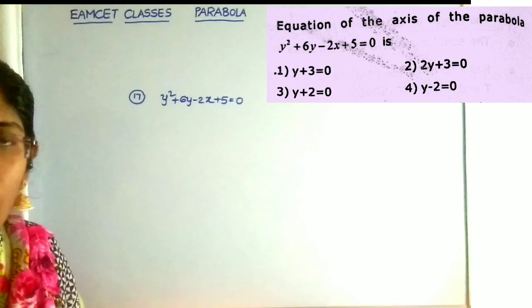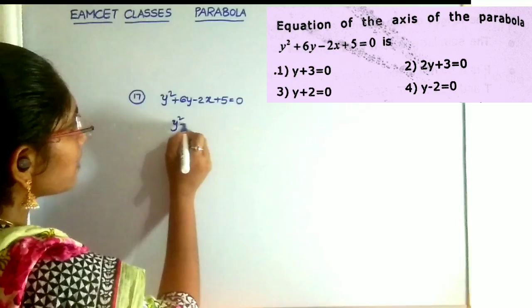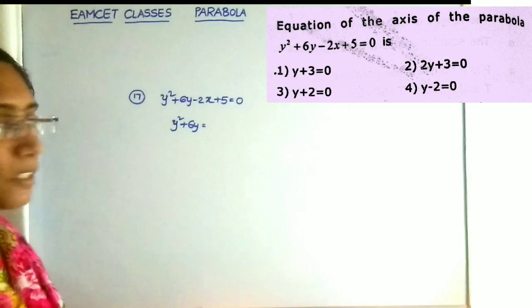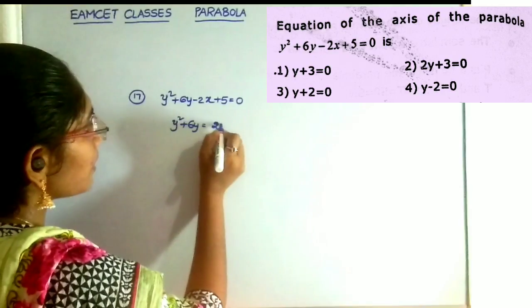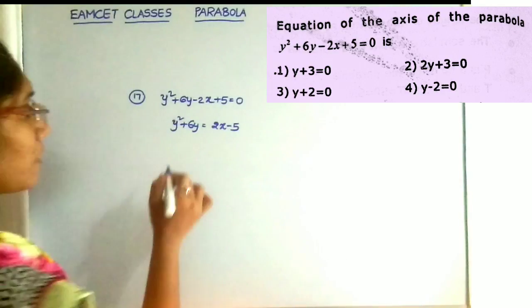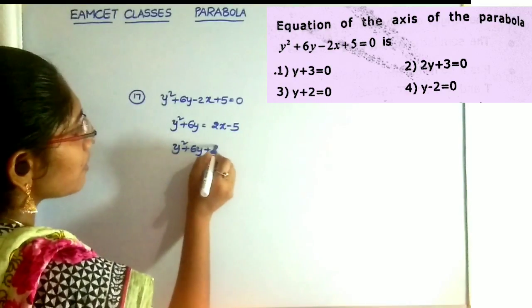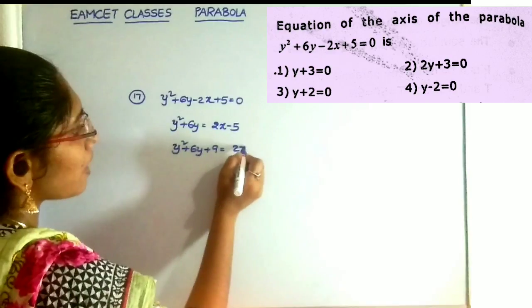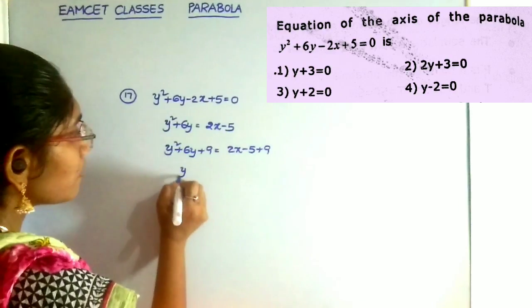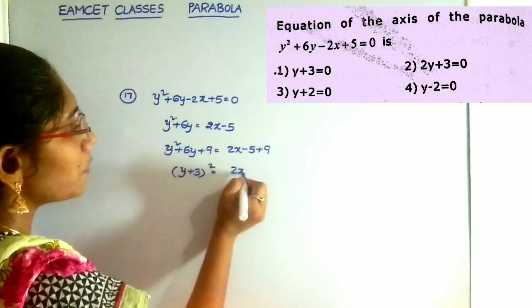The question is: what is the equation of the axis of the parabola? For that, first of all, we have to convert the given parabola into the known parabola form. We first write the equation as y squared plus 6y is equal to 3x minus 5. After that, we add the number 9 to this equation. That is, y squared plus 6y plus 9 is equal to 3x minus 5 plus 9.